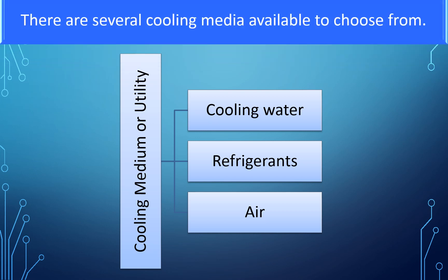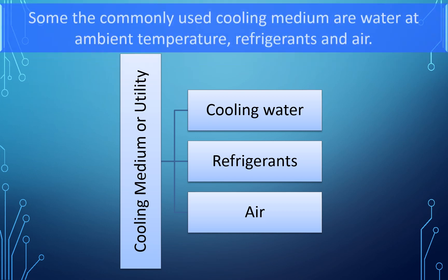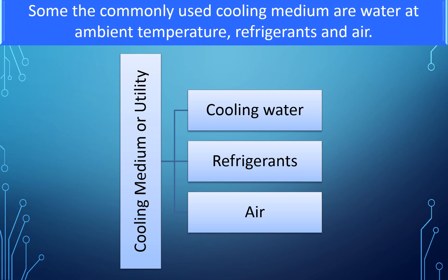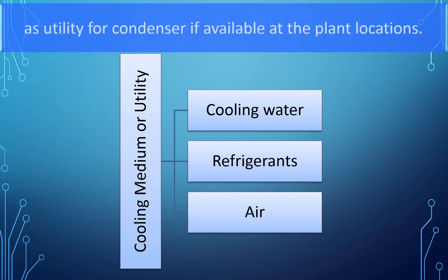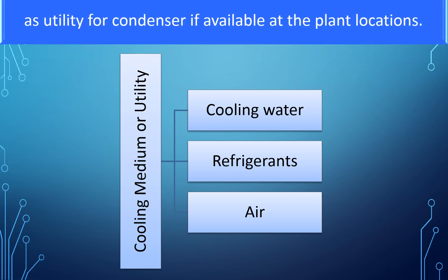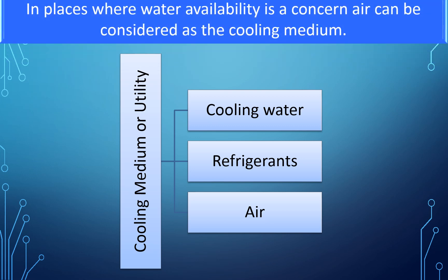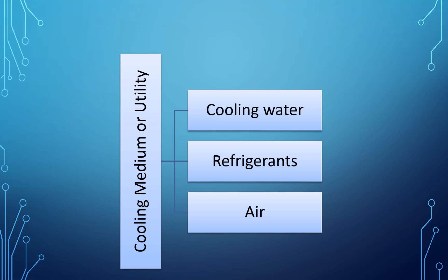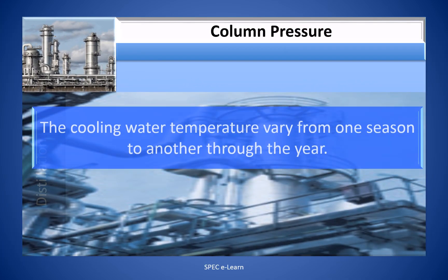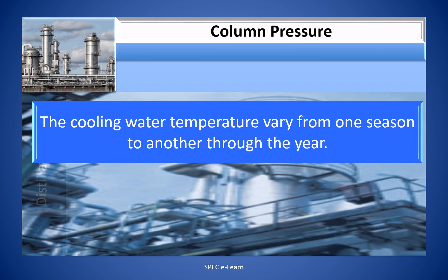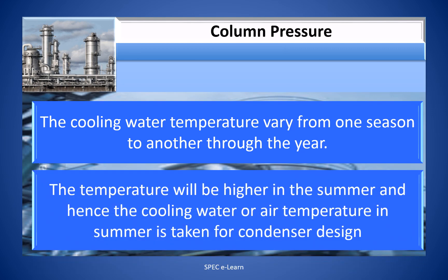There are several cooling media available to choose from. Some of the commonly used cooling media are water at ambient temperature, refrigerant, and air. From an economic point of view, it is usual engineering practice to use cooling water as utility for condensers if available at the planned location. In places where water availability is a concern, air can be considered as the cooling medium. The cooling water temperature varies from one season to another throughout the year, and the temperature will be higher in summer; hence the cooling water or air temperature in summer is taken for condenser design.